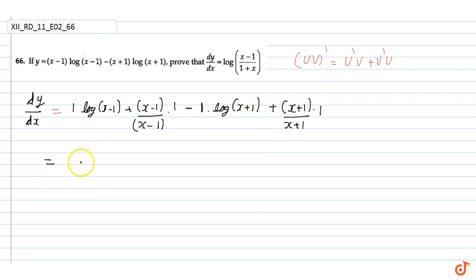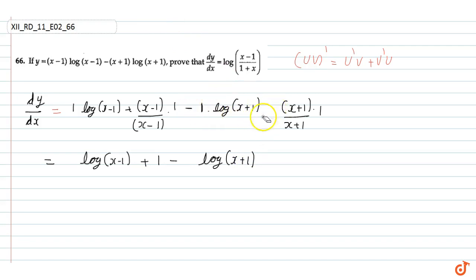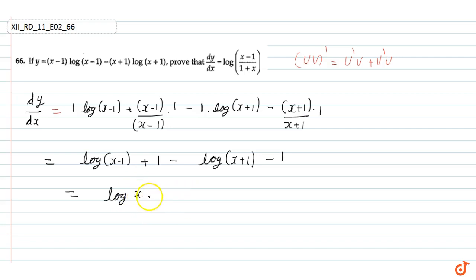So, this is equal to log(x minus 1) plus 1 minus log(x plus 1). अब यहाँ पर यह plus हमने गलत लगा दिया है, क्योंकि minus में जब plus को minus से multiply करेंगे तो minus आएगा। तो यहाँ भी minus आएगा — this is minus 1. This is equal to log(x minus 1) minus log(x plus 1).